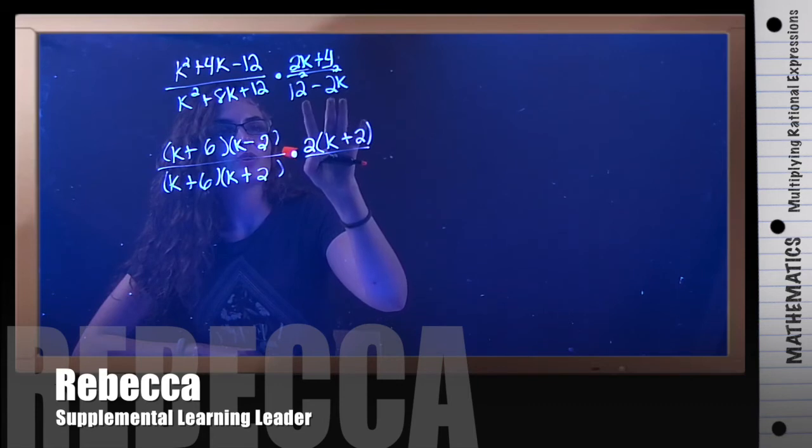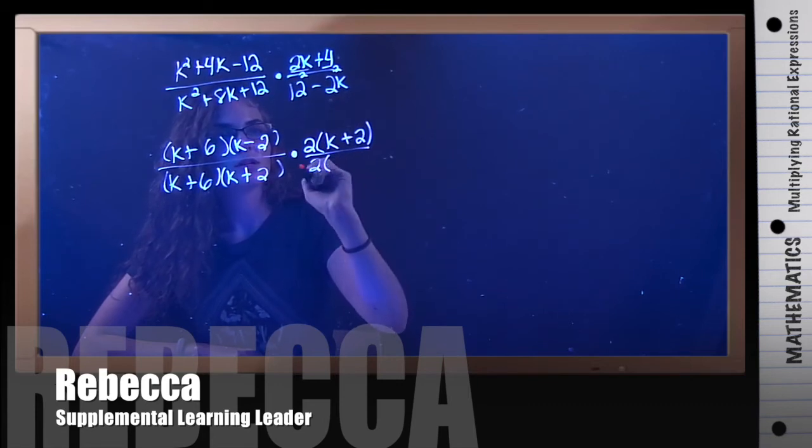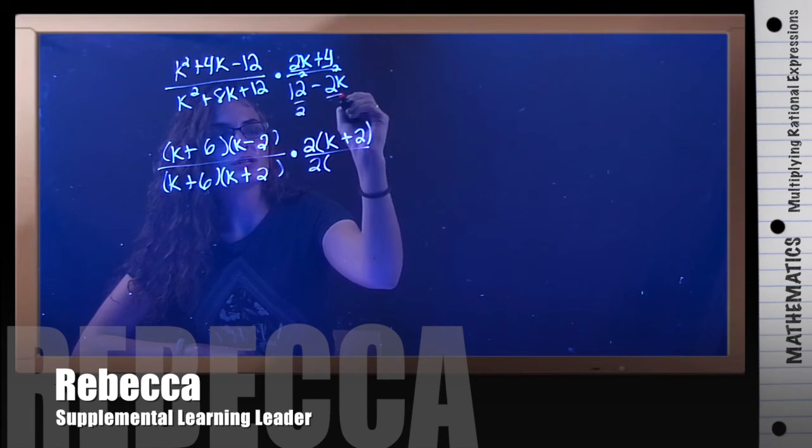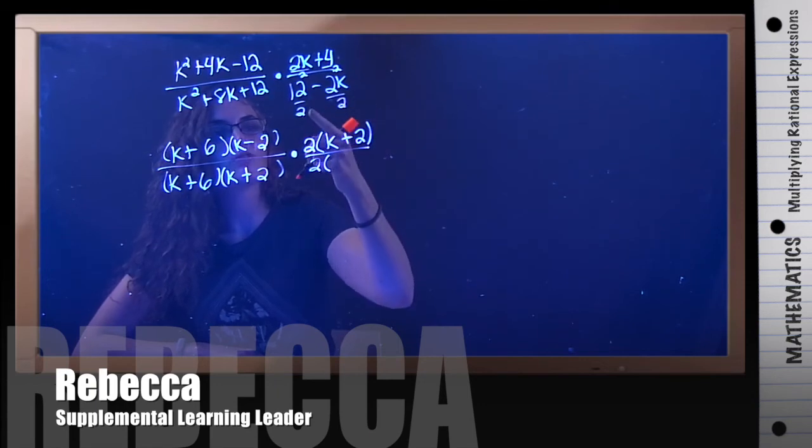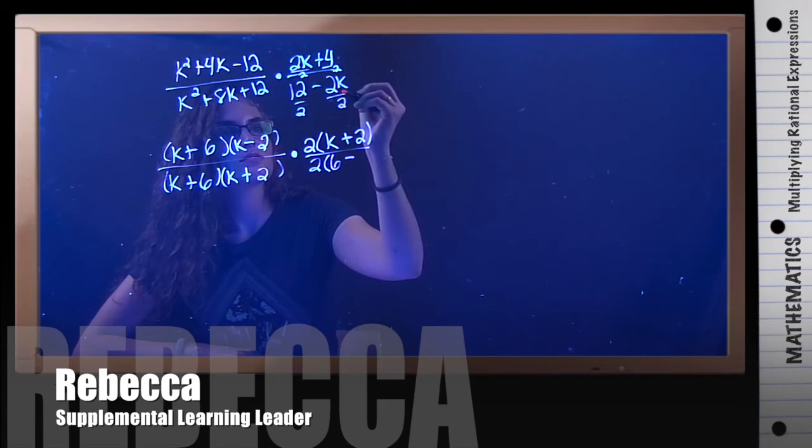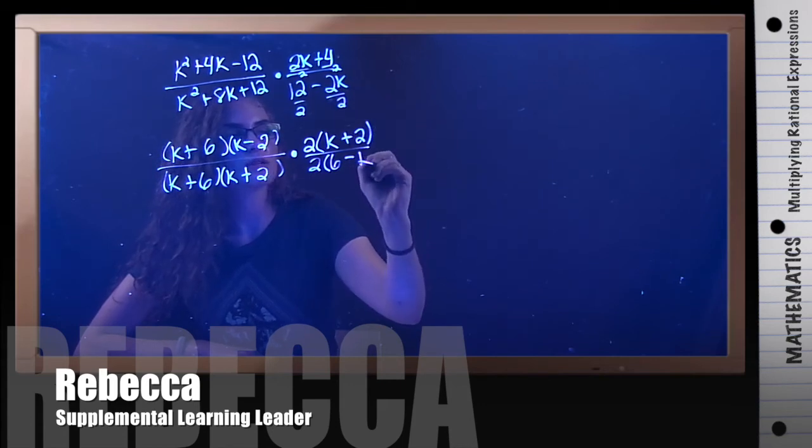On the bottom we have a GCF of 2 as well, so we need to divide by 2 here also. 12 divided by 2 is 6, minus 2k divided by 2 is k.